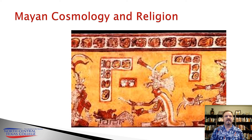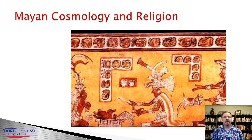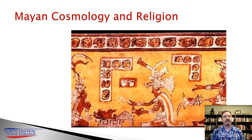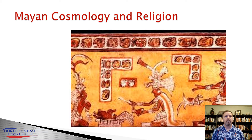For the Mayans there was not a distinct division between the natural and supernatural spheres, but rather a constant interaction between them. The Mayans believed the universe was made up of three realms: the upper world, the middle world, and the underworld. The gods, spirits, and ancestors all dwelt in the upper world and underworld, and they shared the middle world with human beings.